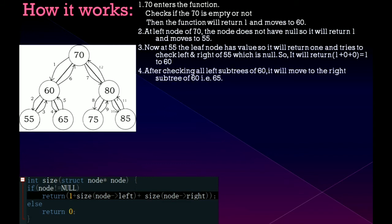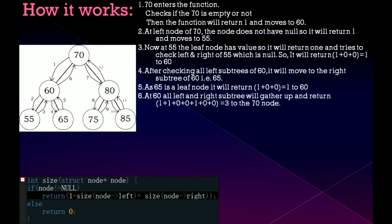After checking all left subtree of 60, it will move to the right subtree of 60, that is 65. As 65 is also similar to 55, it will return 1 to 60. All left and right subtree of 60 will gather up and return 3 to the 70 node.